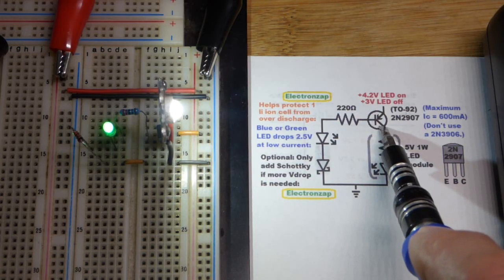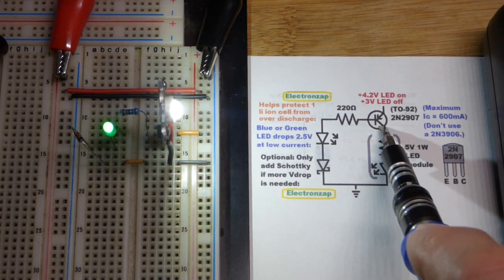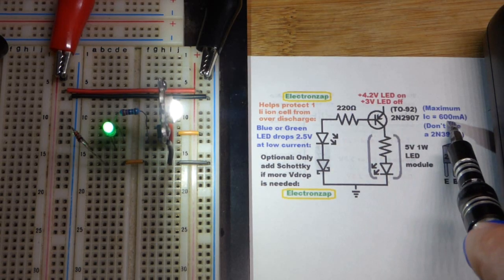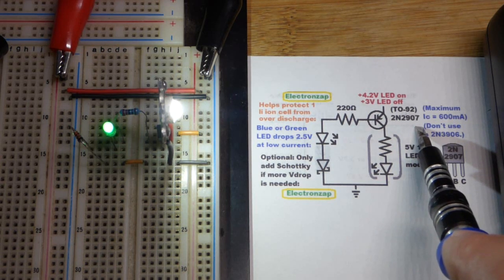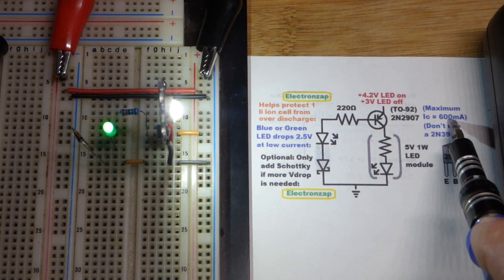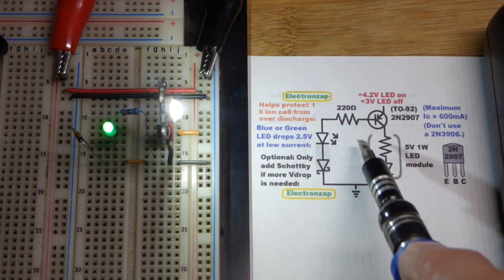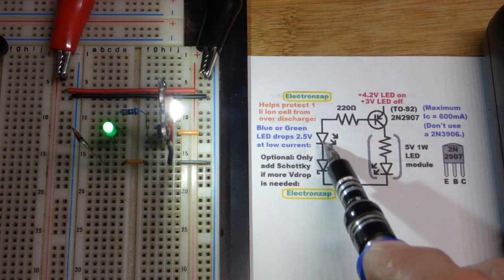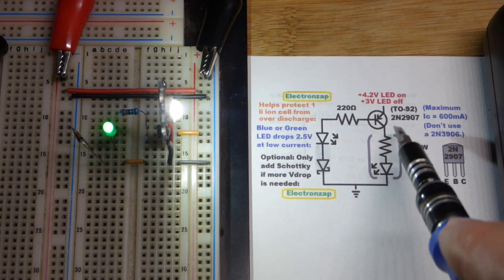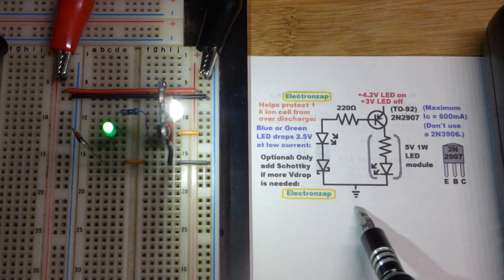With 5 volts, you get about 200 milliamps of current and one watt of power. So we have a PNP bipolar junction transistor. We need to handle up to 200 milliamps of current. So I'm using the 2N2907, which can handle up to 600 milliamps of current when it's switching.